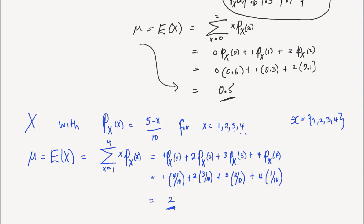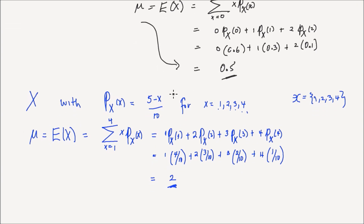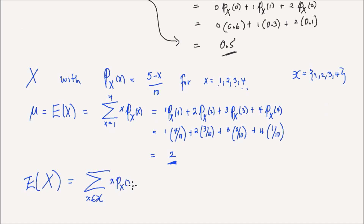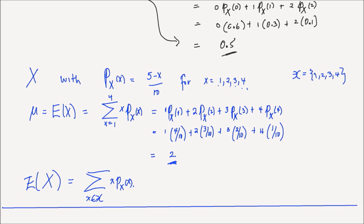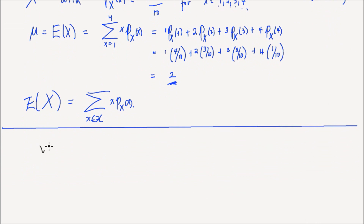Therefore, we have the expectation. We now have an idea of how to find the expectation of a discrete random variable x: it is the sum over all the support of x times P_x(x). What if we have a continuous random variable? Let's say we have a continuous random variable y.